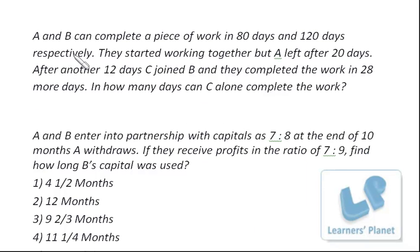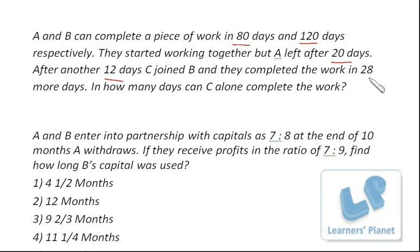Let's see these problems. First, A and B can complete a piece of work in 80 days and 120 days respectively. They started work together but A left after 20 days. After another 12 days, C joined B and they completed the work in 28 more days. In how many days can C alone complete the work? This is a very simple problem.